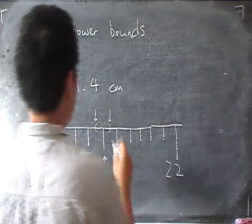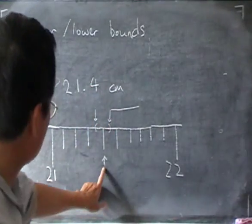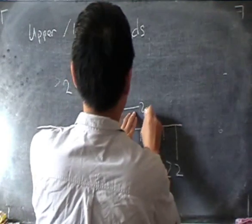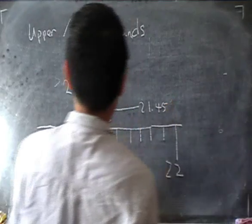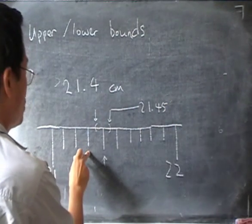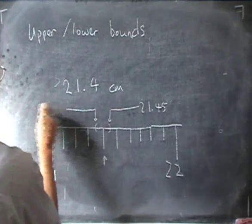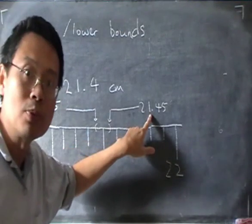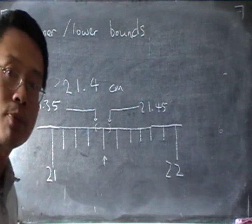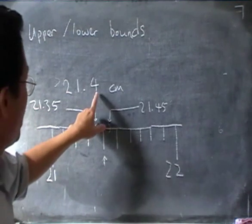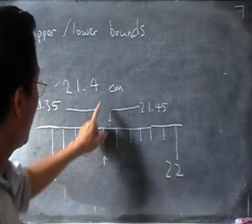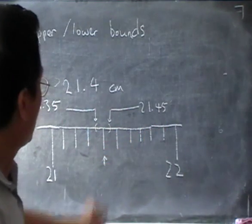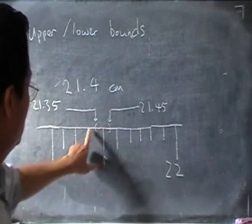So if I write those out, now that's 21.4 right, so that must be 21.5. In the middle, it's 21.45. And on the other side, that's 21.3, so this must be 21.35. So that means that that's the upper bound, and that's the lower bound. So it's quite simple. I just have to add half of the next decimal place, that means in this case 0.05, and I'll get the upper bound, and I subtract half of the interval, and I get the lower bound.